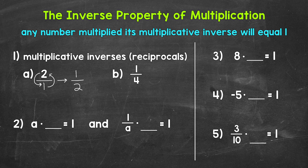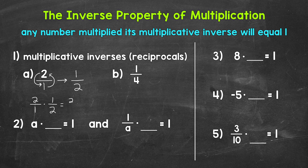So the multiplicative inverse of 2 is 1 half. Now let's multiply 2 by 1 half to show that it equals 1. So 2 over 1 times 1 half — when we multiply fractions, we go straight across. Numerators: 2 times 1 equals 2. Denominators: 1 times 2 equals 2. So we get 2 over 2, which is 1.